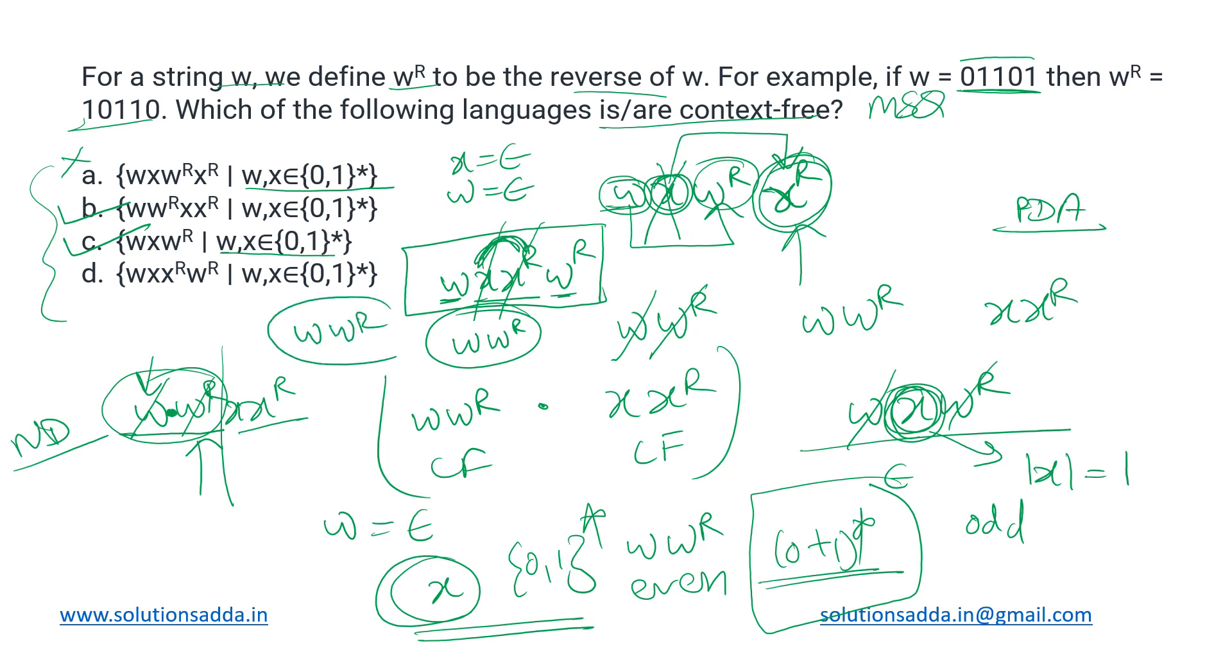Hence we can say this option D is also a CFL. So B, C, and D are all context-free languages. A is not. So our answer would be B, C, and D.